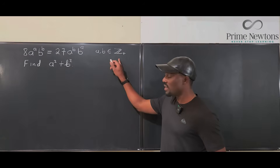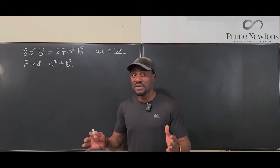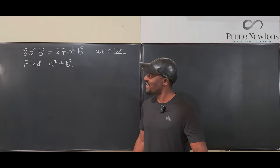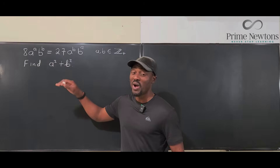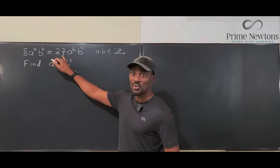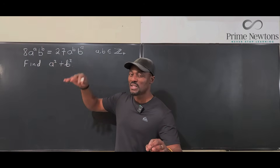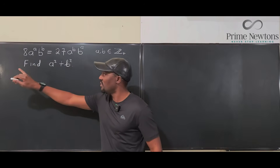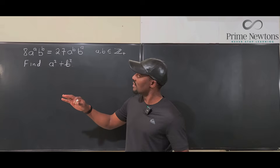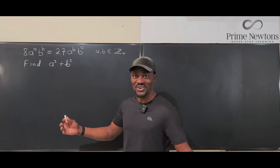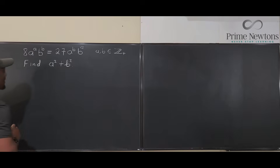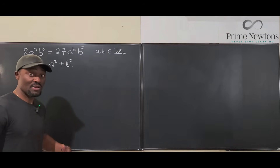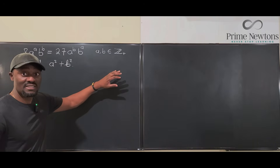With a problem like this dealing with positive integers, your number of options are very minimal because all numbers must be positive integers. I can already see that I can form a fraction or rational expression, because I have 8 and 27. Having exponential expressions with 8 and 27 shows you're dealing with numbers like 2 and 3, because 8 is 2 to the third and 27 is 3 to the third.